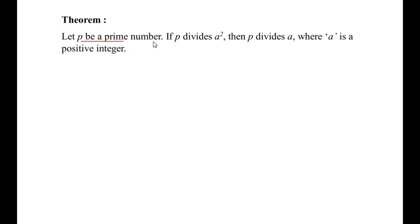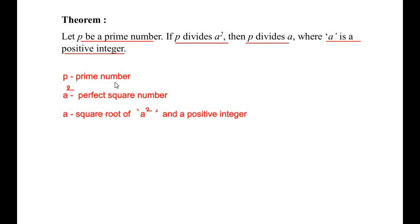Let p be a prime number. If p divides a squared, then p divides a, where a is a positive integer. So there are many conditions given here. p is a prime number, a squared is a perfect square number because any number squared or raised to the power of 2 is a perfect square number. And a is the square root of a squared and it should be a positive integer.